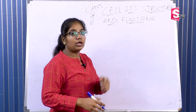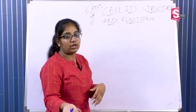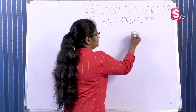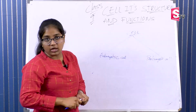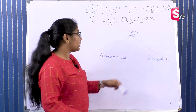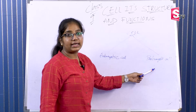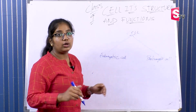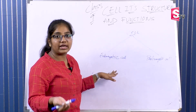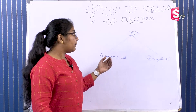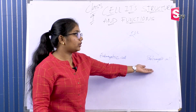To summarize today's lesson: there are two types of living organism cells — unicellular and multicellular. There are also two types of cells: eukaryotic and prokaryotic. Eukaryotic cells have membrane-bound organelles. Prokaryotic cells do not have membrane-bound organelles.